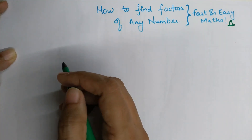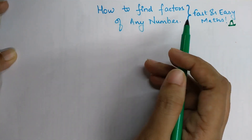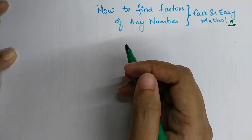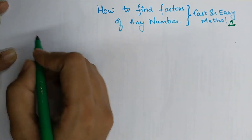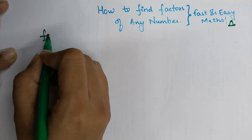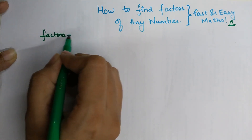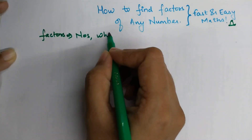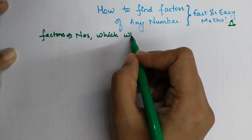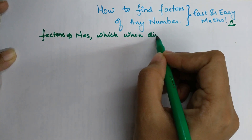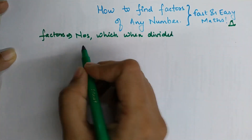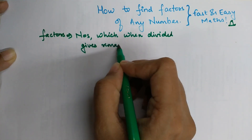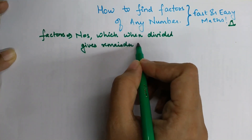Now let's talk about how to find factors of any given number. Factors are basically numbers which when divided give a remainder of 0.